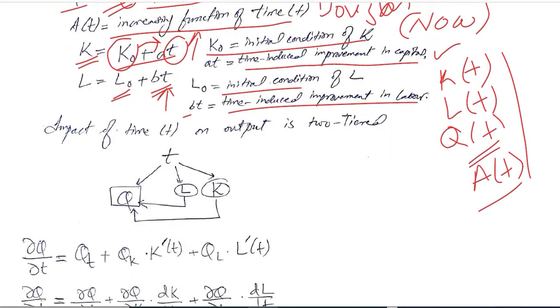So if output is getting affected, it is not just getting affected by one thing. Over time it is increasing. Time is affecting labor favorably and labor is increasing output. Time is affecting capital favorably and capital is then affecting output.